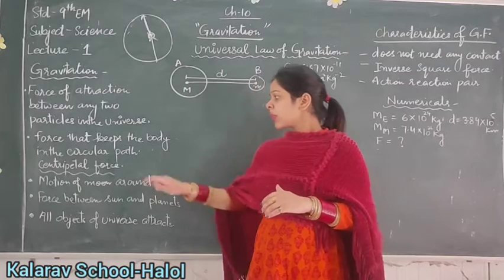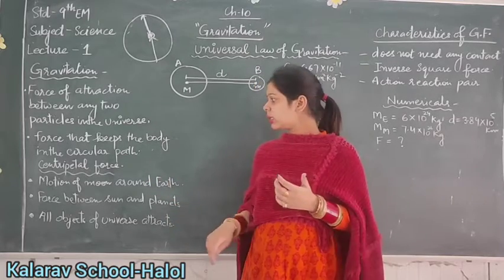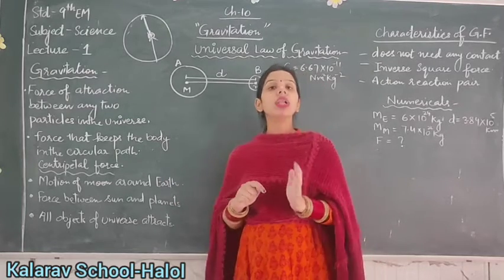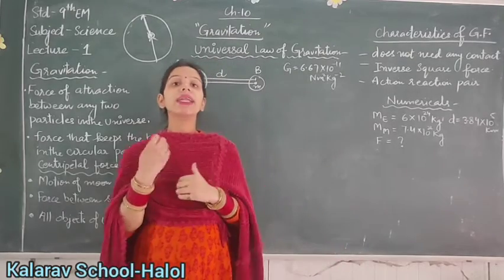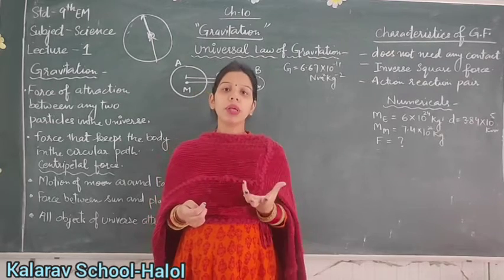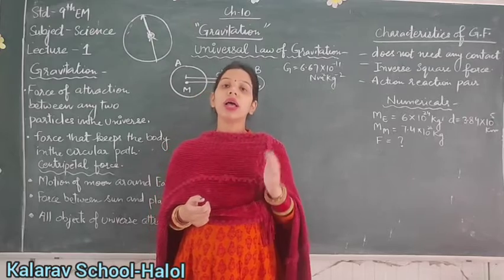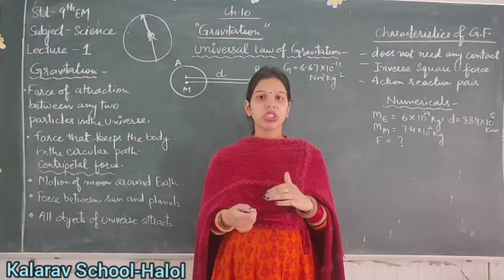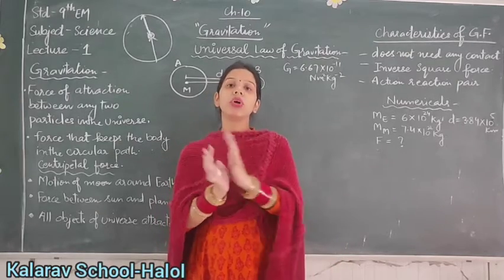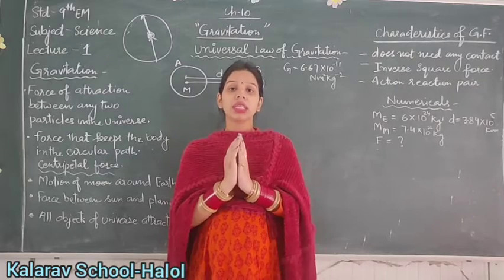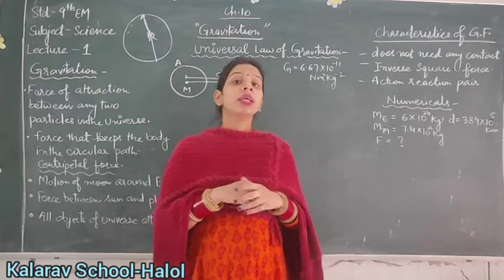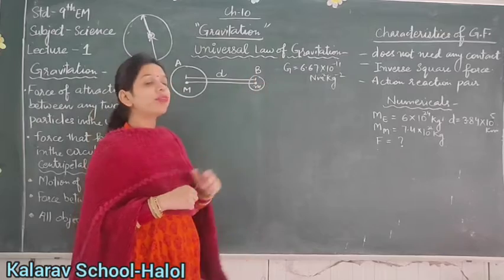Due to this centripetal force, there is motion of the moon around the earth. The force between the sun and a planet is also called centripetal force. All objects in the universe attract each other — the falling of leaves, apples, or mangoes from a tree is due to the force of gravitation. Every object, heavy or small, attracts every other object with a force called gravitation.